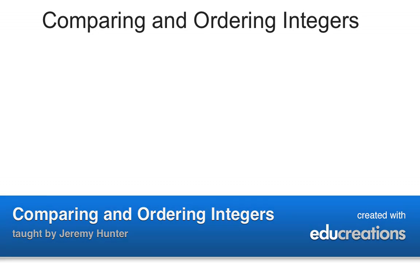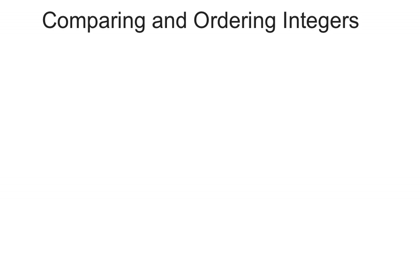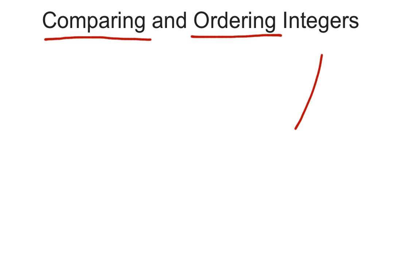All right guys, here we go with today's lesson - moving into working with integers. Today's lesson is going to be comparing and ordering integers, kind of two parts. The first part is comparing different numbers, saying which number is bigger and which is smaller. The second part, ordering, is taking a group of numbers and putting them in order from least to greatest or greatest to least - listing them in numerical order.